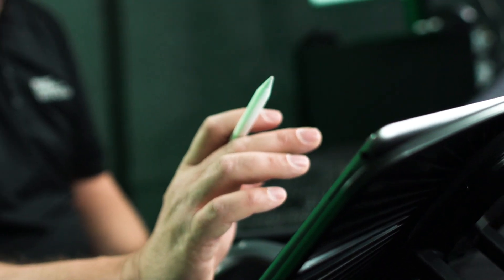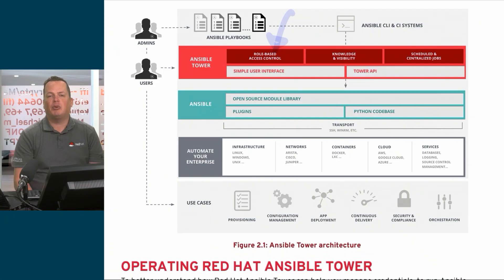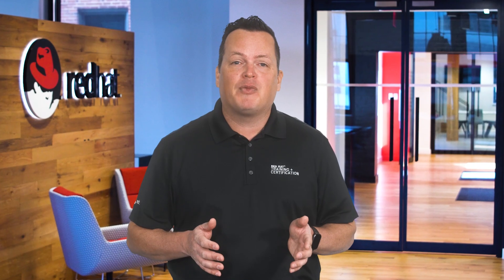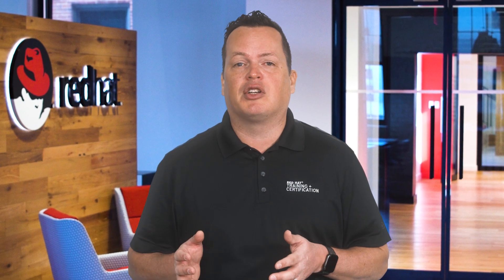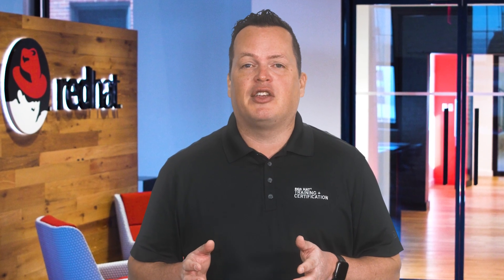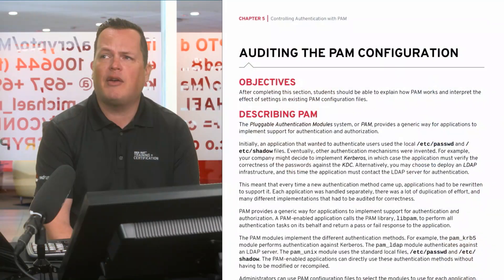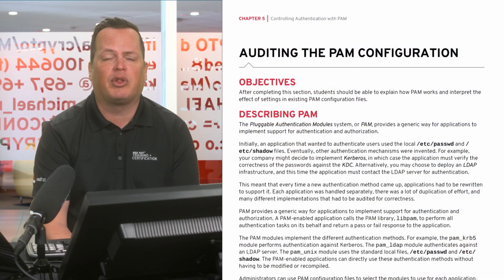This is a hands-on class, just like every Red Hat class is. We're going to talk about things like Ansible Tower. We're going to talk about how you can use LUKS encryption. And one of the neat things that we include with LUKS encryption is how you can use network-bound disk encryption as a way of automatically unlocking those devices at boot time.